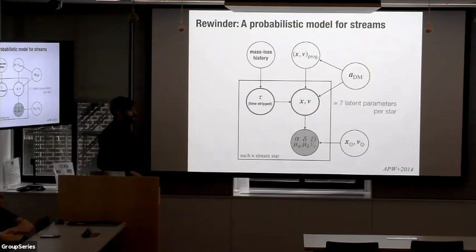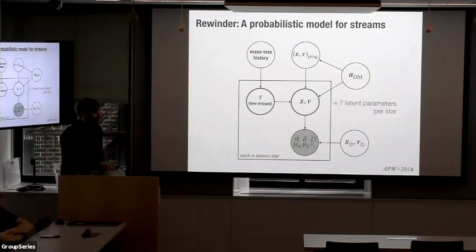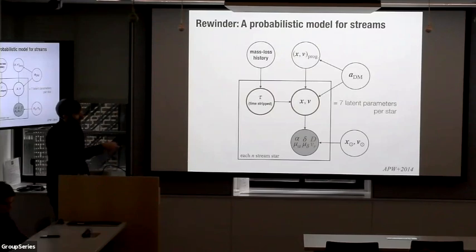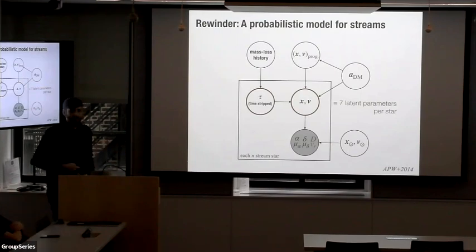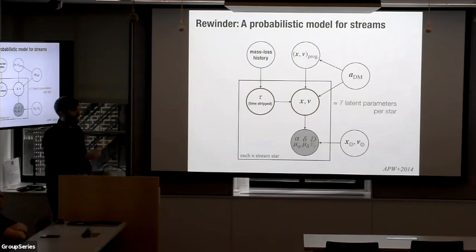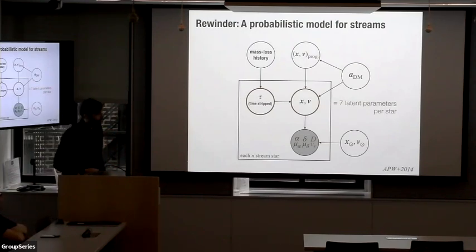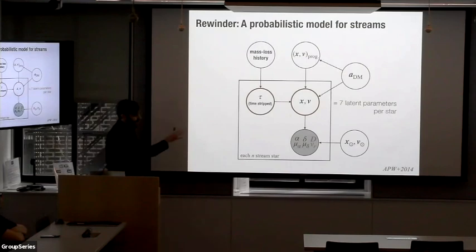One of the not-so-nice properties of this model is all of these latent parameters. Because we need to map from the true position and velocity to the data we have today, we need to add in the 3D position and 3D velocity for each star, along with the time that it's stripped — which connects back to the mass-loss history. So computationally, this is a bit of a challenge.